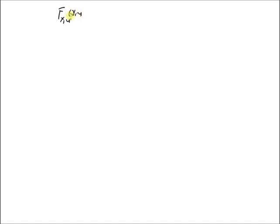Hello, welcome. In this short video, let us look at the extreme values of the joint CDF function of two random variables X and Y. The joint CDF F(x,y) of x comma y is equal to, by definition, the probability that the random variable X is less than or equal to small x and the random variable Y is less than or equal to small y. This is the definition of the joint CDF, and now we want to look at different extreme values of this joint CDF function.